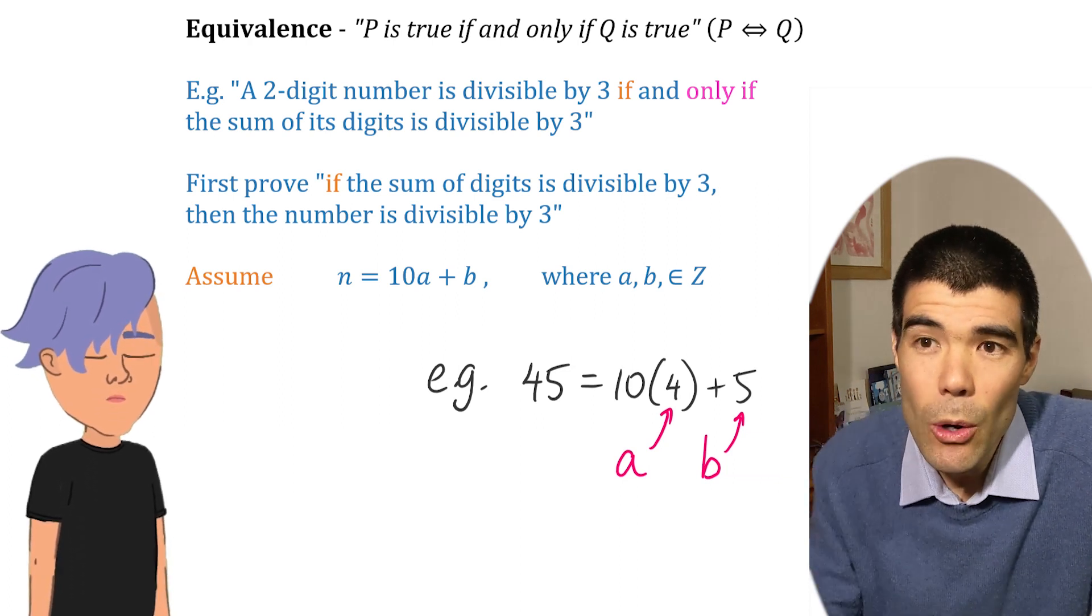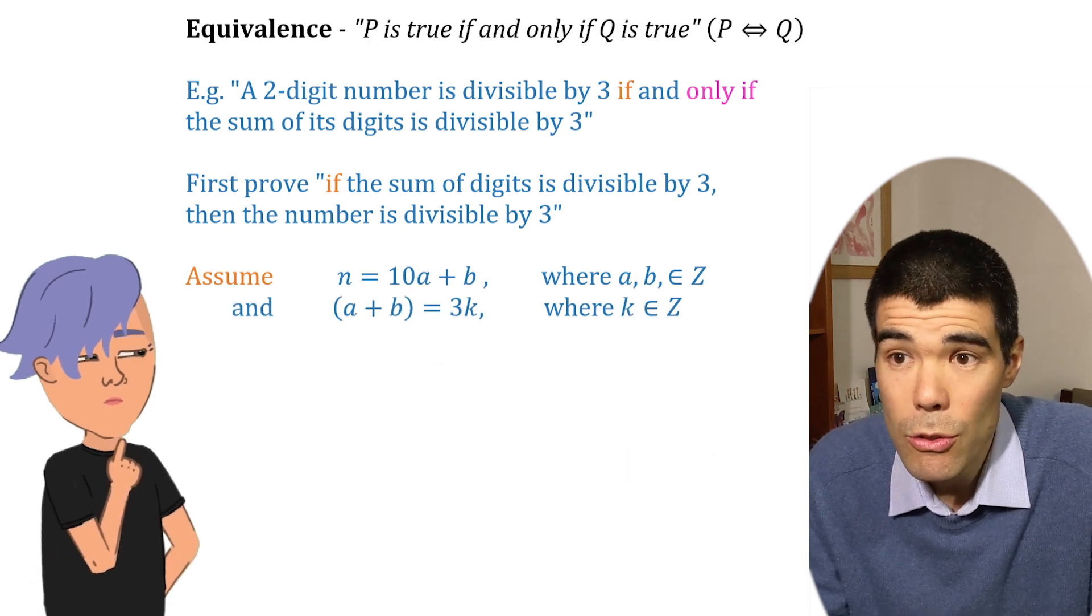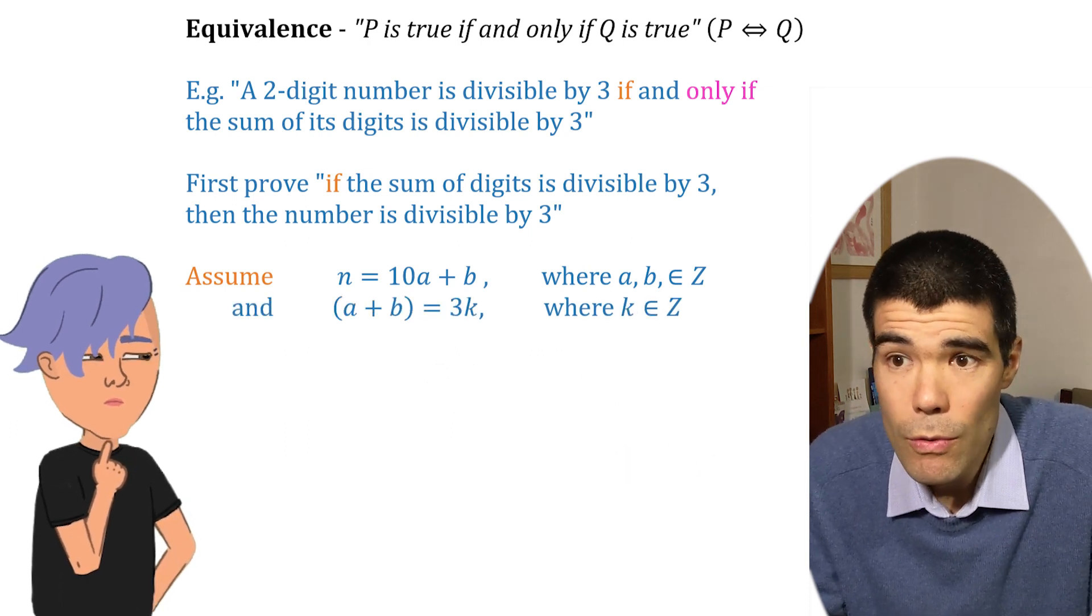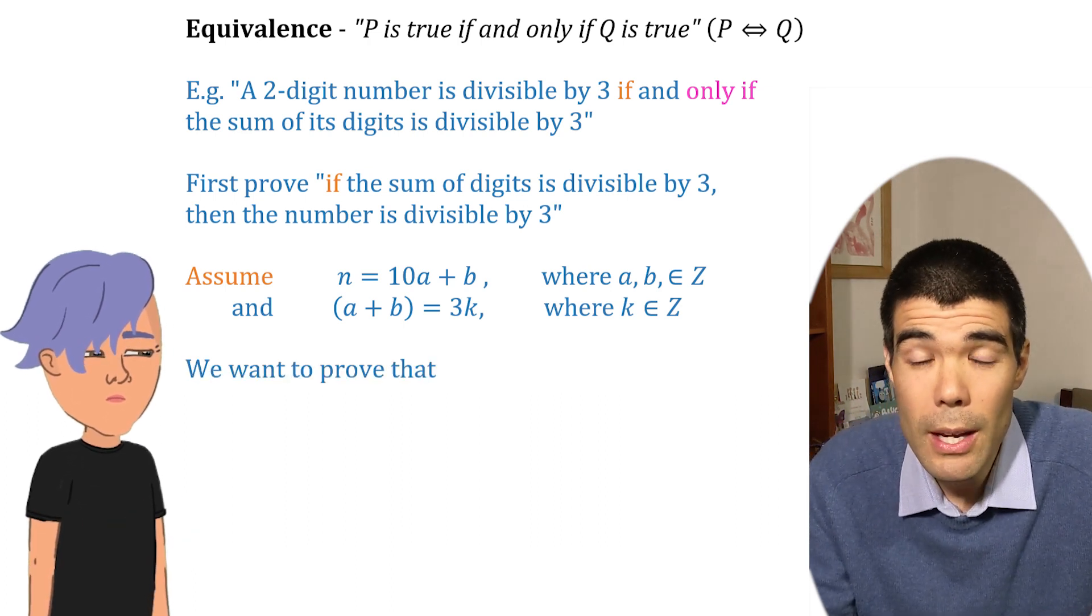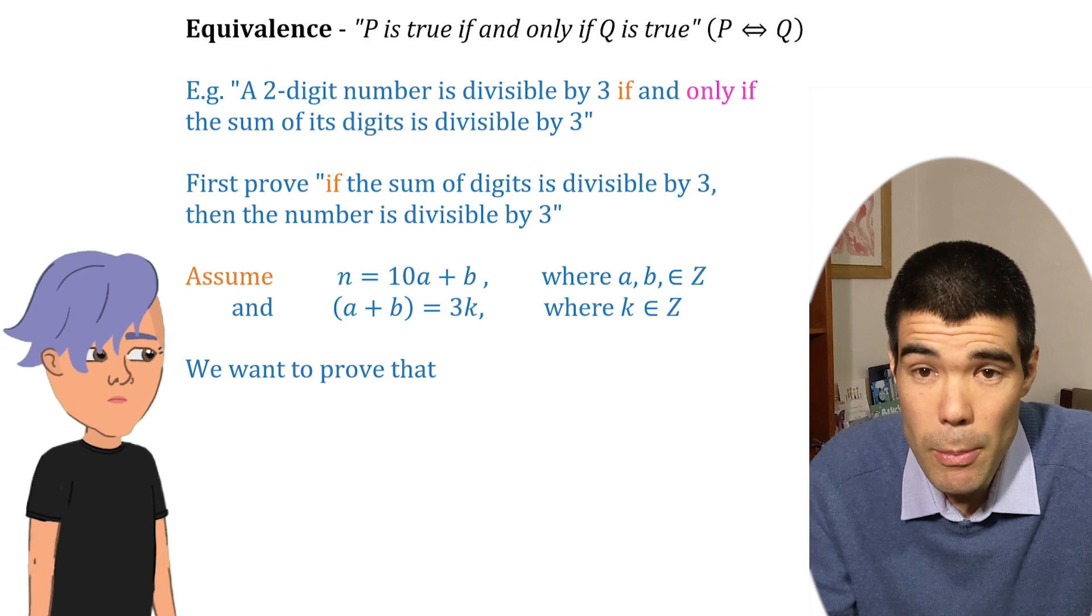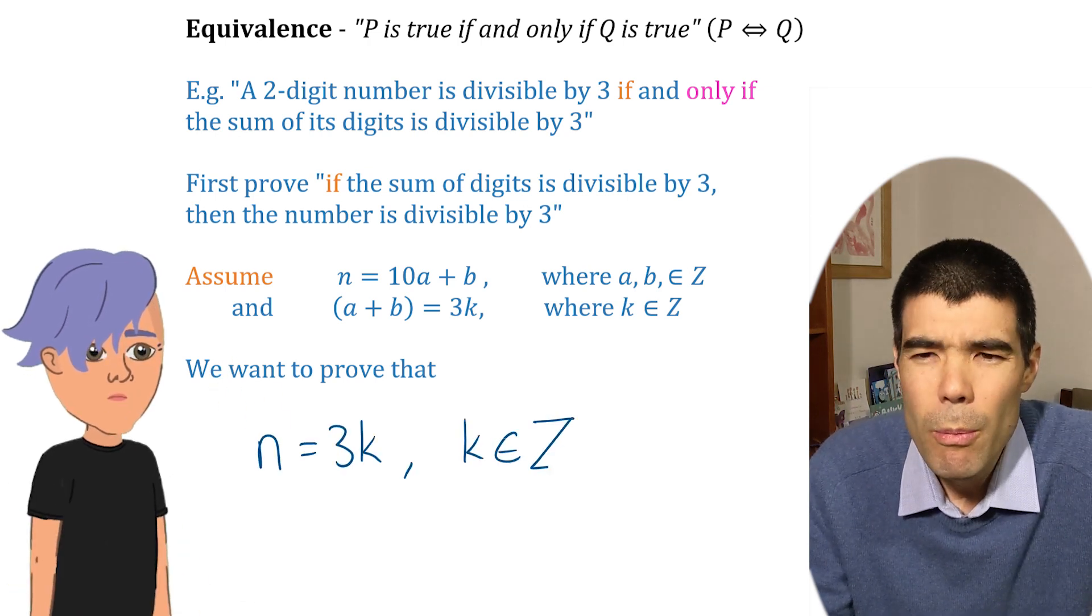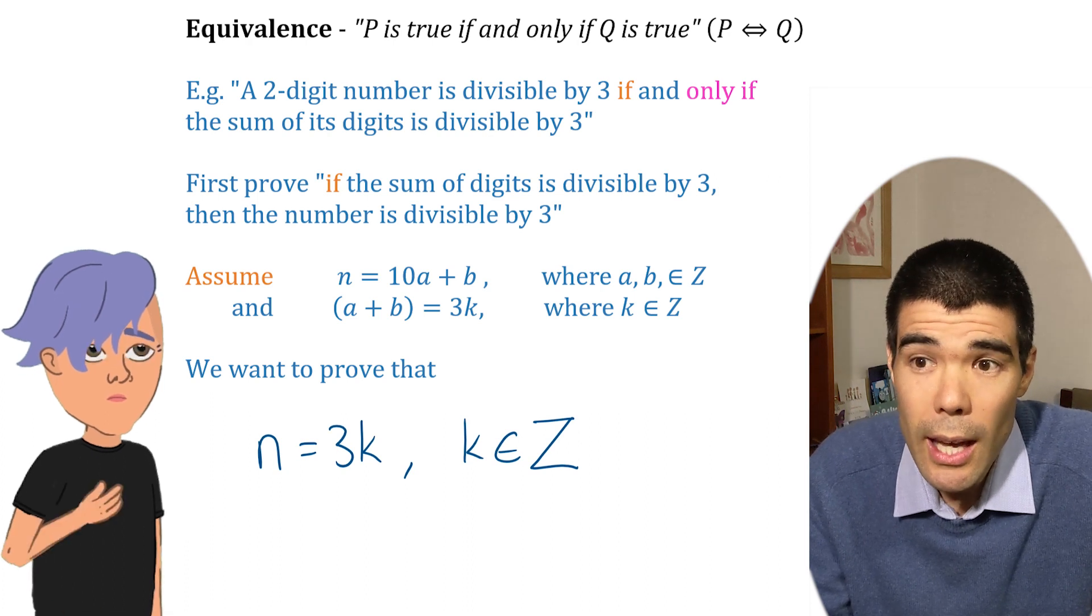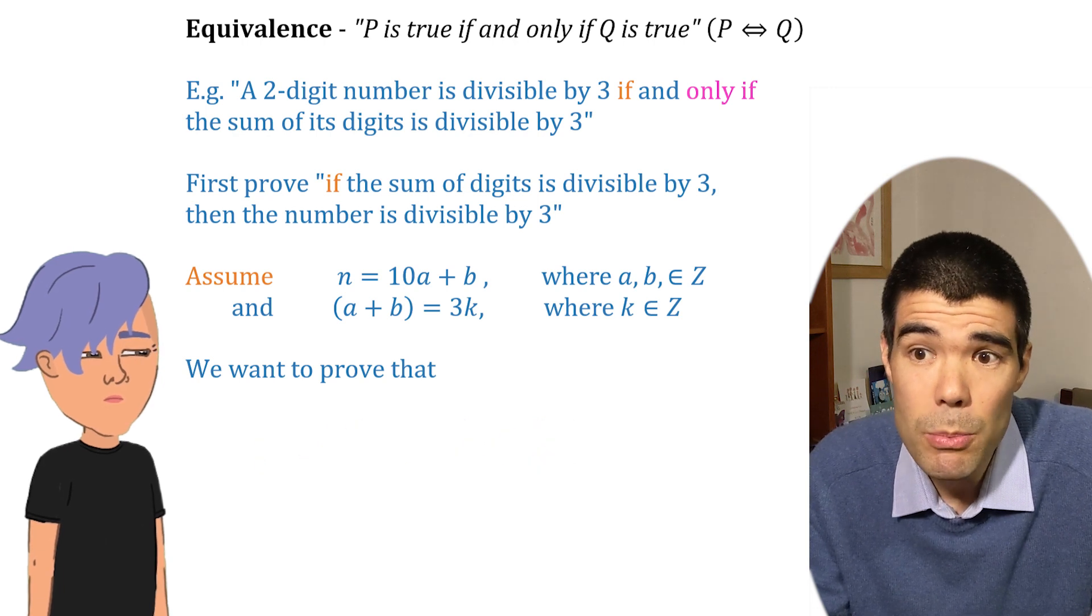Alright. Then we're also allowed to assume that the sum of the digits is divisible by 3. So let's say 3k where k is some integer. And we want to prove that the number itself is divisible by 3. So 3k again? Right, that's the right idea. But we don't reuse the same letter k. We'll use a different letter to show that the sum of the digits is likely to be a different multiple of 3 than the number itself.